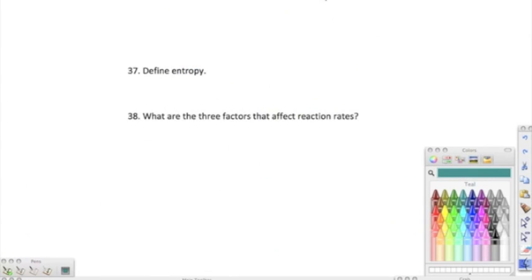Moving on to 37 is defined entropy. And that is the randomness or chaos in a system. 38 is what are the three factors that affect reaction rate? That is concentration, temperature, and surface area.